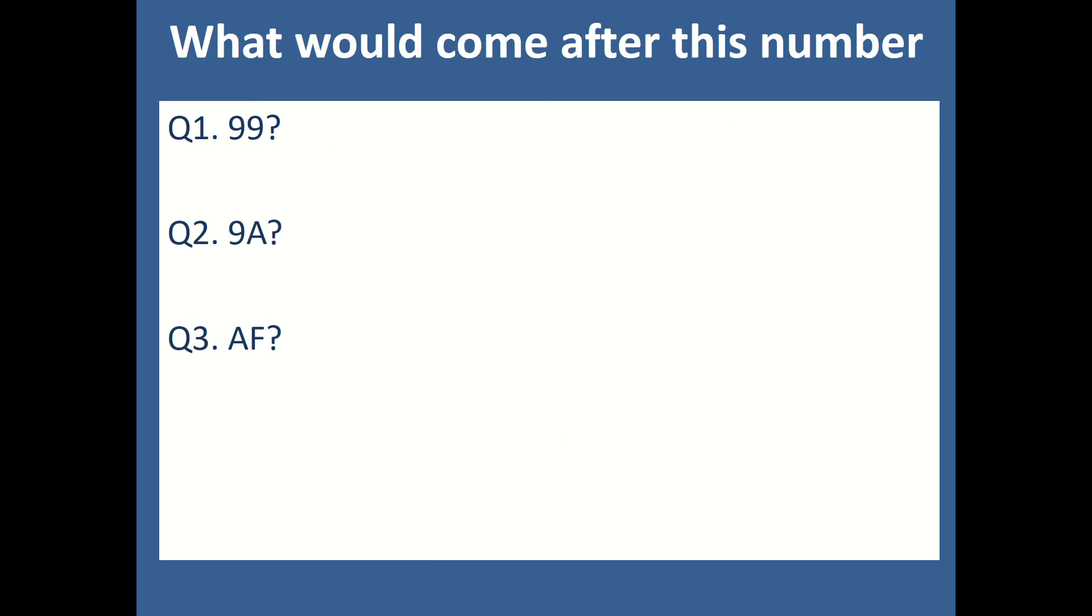So, what would come after this number? 99, 9A and AF. Please pause the video and try and write your answers. Now, if we were using denary, it would be 100 for question 1. But because we're using hexadecimal, after 99, there is another character after 9, which is A. So, it would be 9A. So, after 9A, we'd expect 9B. Question 3 is a little bit different. After AF, well, F is the end of our sequence. So, we need to update our value at the front. Now, after A is B. So, we start with B, 0.